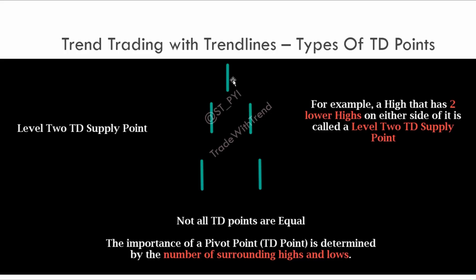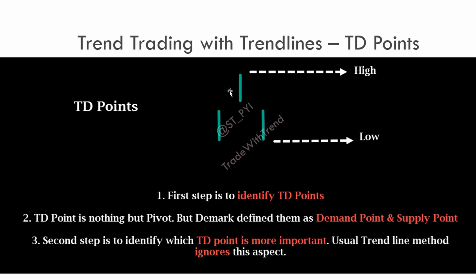If you look at this bar, there are two lower highs before it — one, two — and the same on the right side — one, two. So this becomes a level two TD point. The importance of a TD point is actually determined by the number of surrounding highs and lows. A level two TD point will be more important than a level one TD point. This chart shows a level one TD point: there is just one bar which has a lower high compared to the reference high, and same on the right side.